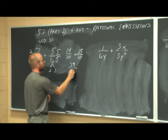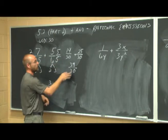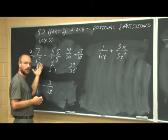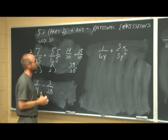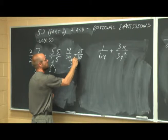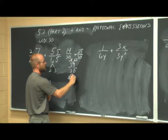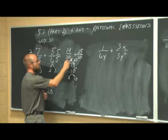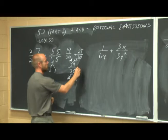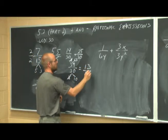Hopefully you watched the previous video and this example looks familiar. Now we reduce: factor 39 as 3 times 13, and factor 30 as 3 times 10. We can reduce the common factor of 3 to 1. So 1 times 13/10 equals 13/10.